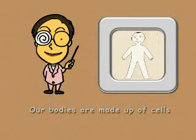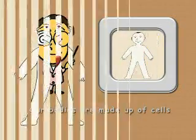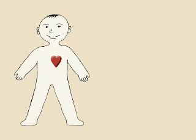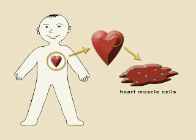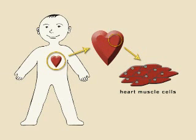Our bodies are made up of millions of tiny parts called cells. There are many different kinds of cells, depending upon their function in the body. For example, the heart muscle cells that keep a heart beating.